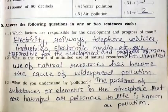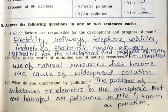Now we'll continue with question number five, answer in one or two sentences. First: which factors are responsible for the development and progress of man? Electricity, railways, telephone, vehicles, industries, electronic media, etc. are responsible for the development and progress of man. Second: what is the result of unlimited use of natural resources? Unlimited use of natural resources has become the cause of widespread pollution.